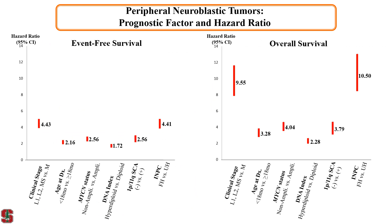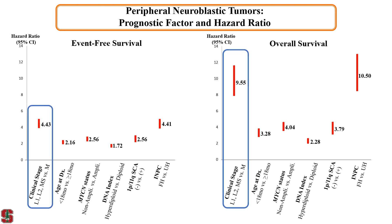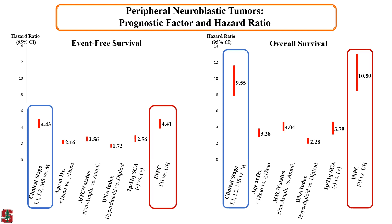This slide shows hazard ratios of individual prognostic factors. Clinical staging distinguishing stage M — metastatic disease — from stage L1, L2 localized diseases, and stage MS gives us a very high hazard ratio. Also, the pathology classification by INPC distinguishing favorable histology from unfavorable histology groups also gives us a very high hazard ratio.